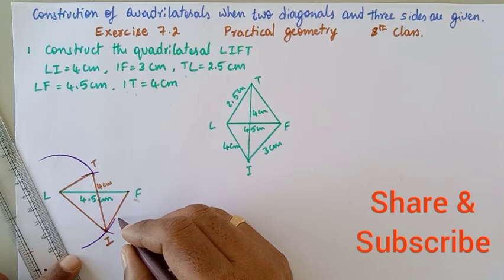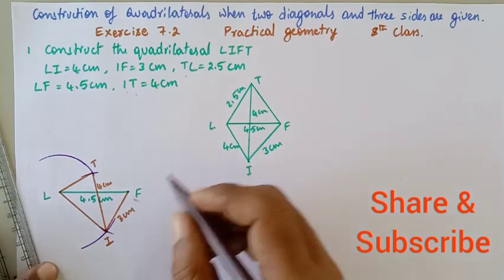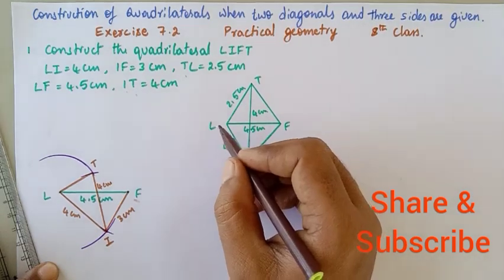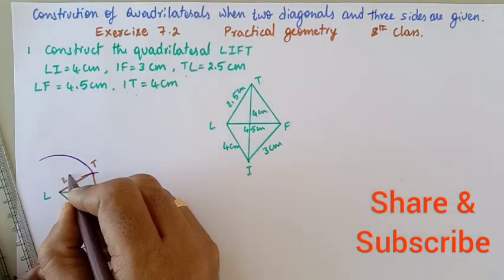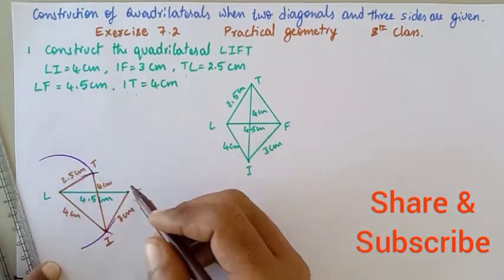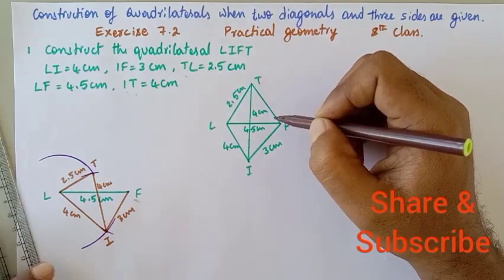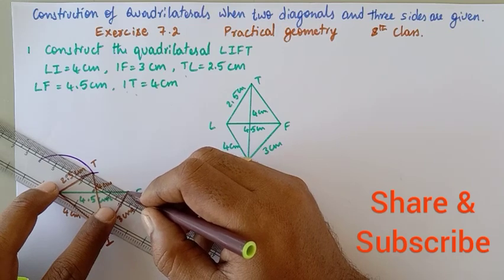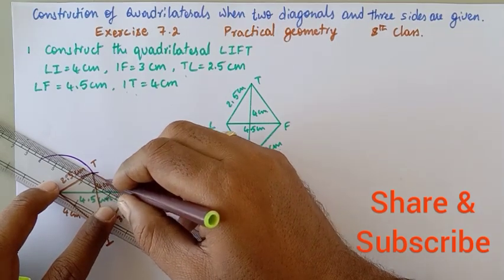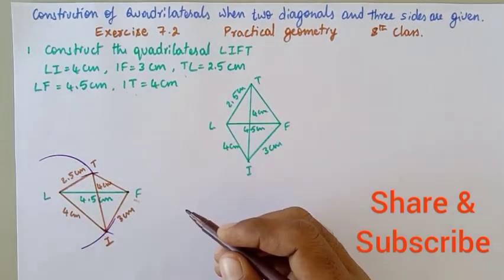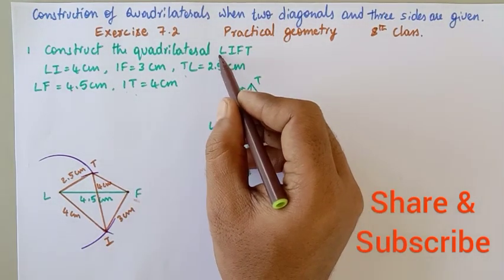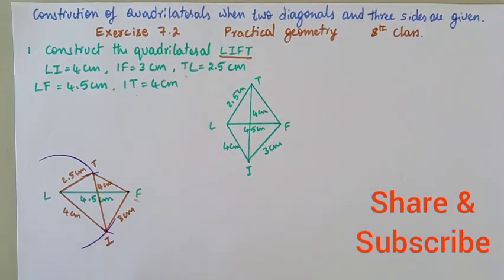The remaining side is TF — simply join T and F without any measurement. We will join T and F, and this completes the construction of the quadrilateral LIFT.